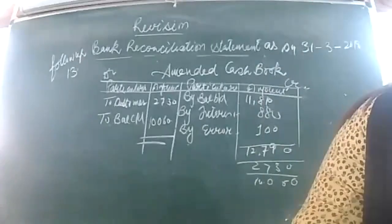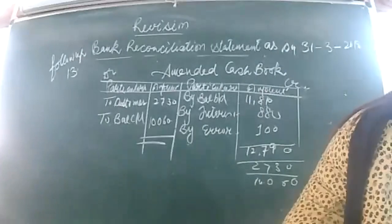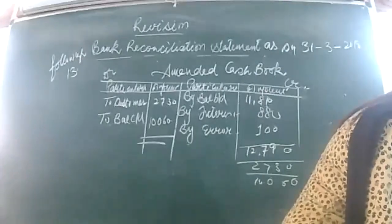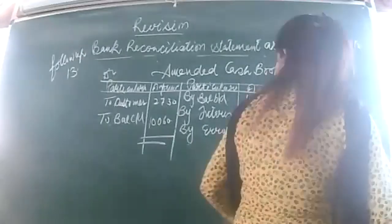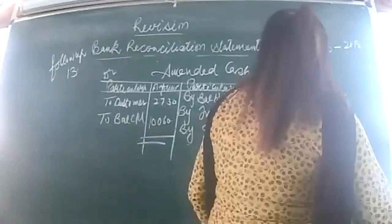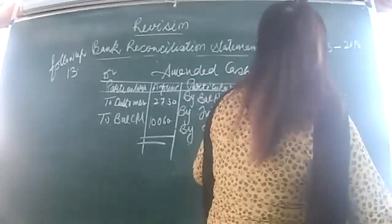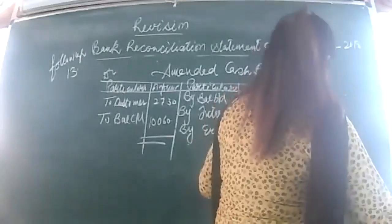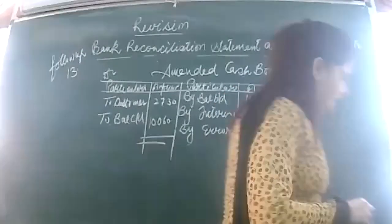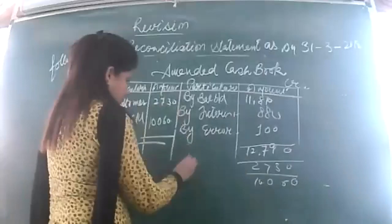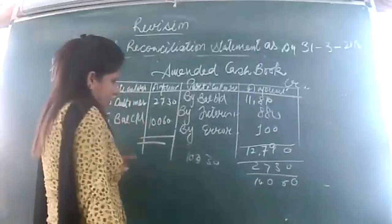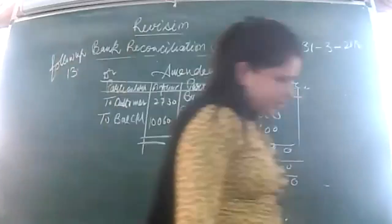The amended cash book answer is 10,330. I calculated 270 less — totalling to get nine thousand something — ten thousand three hundred and thirty. There is a difference of 270, which means I skipped an item. There is a 270 difference — let me check the first transaction.